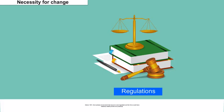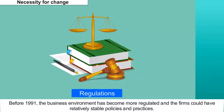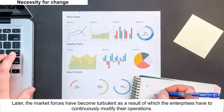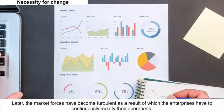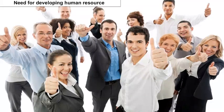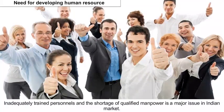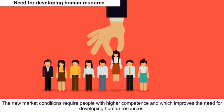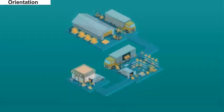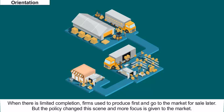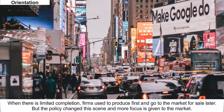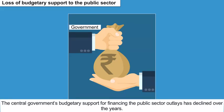Necessity for Change: Before 1991, the business environment was more regulated and firms could follow relatively stable policies and practices. Later, market forces became turbulent, requiring enterprises to continuously modify their operations. Need for Developing Human Resources: Inadequately trained personnel and shortage of qualified manpower is a major issue in the Indian market. New market conditions require people with higher competence, increasing the need for developing human resources. Market Orientation: Where there was limited competition, firms used to produce first and then go to market. The policy changed this and more focus is now given to the market. Loss of Budgetary Support to the Public Sector: The central government's budgetary support for financing the public sector has declined over the years.